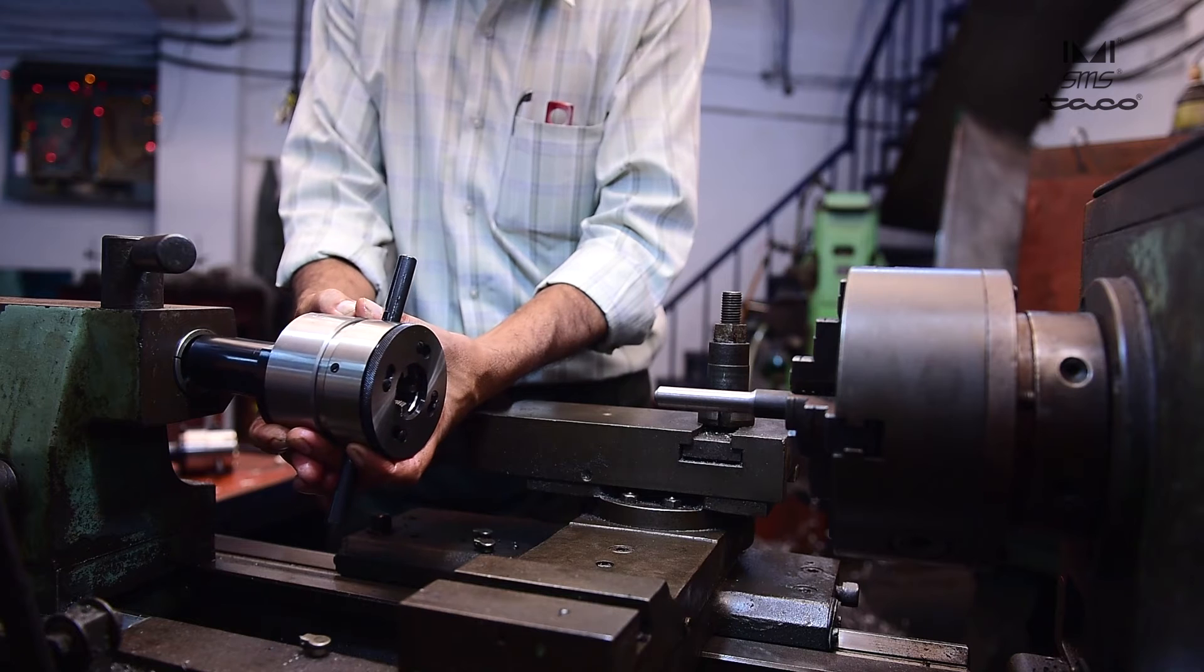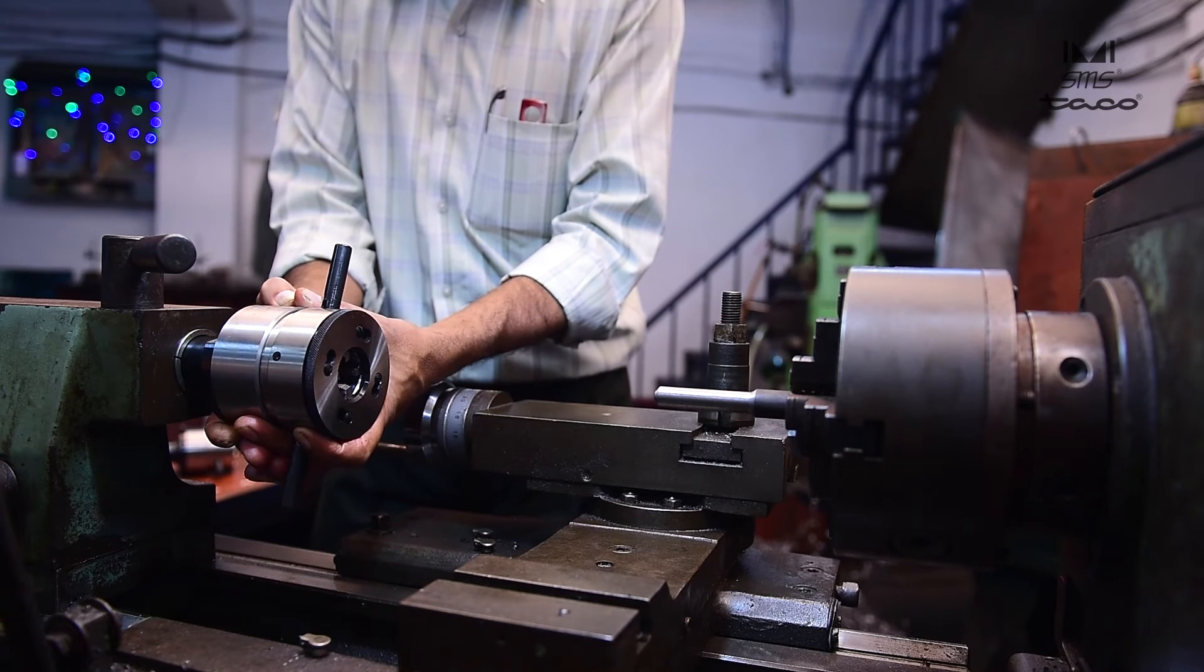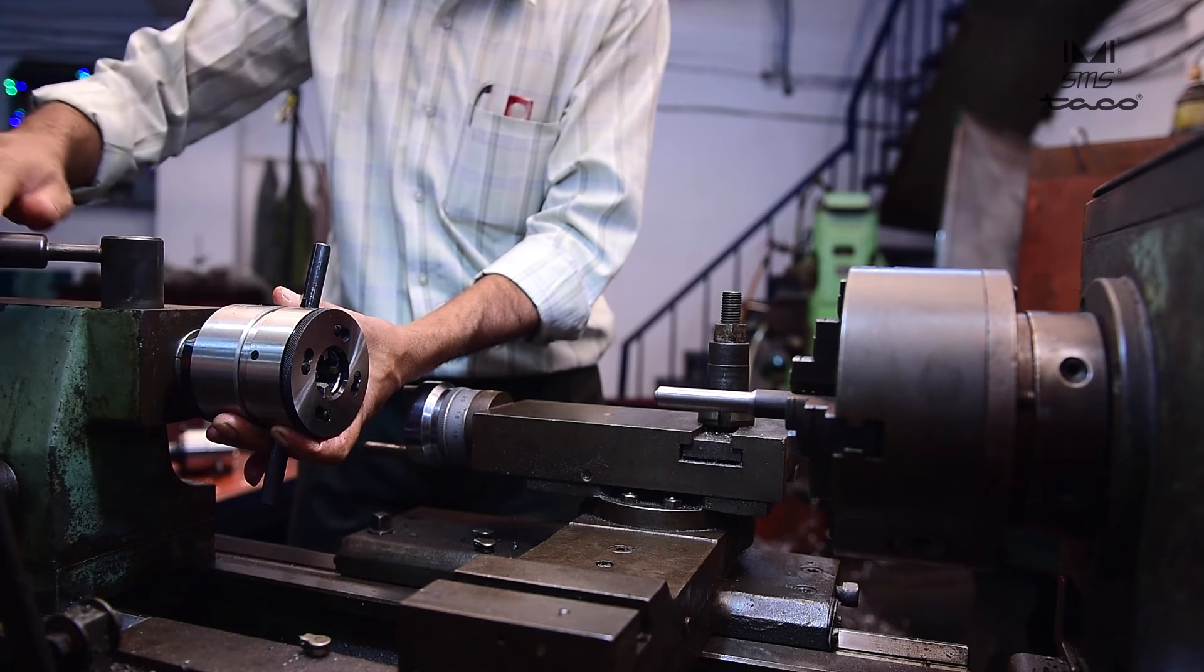The shank of the die head is inserted in the tail stock of the lathe, and the workpiece is fixed in a chuck.